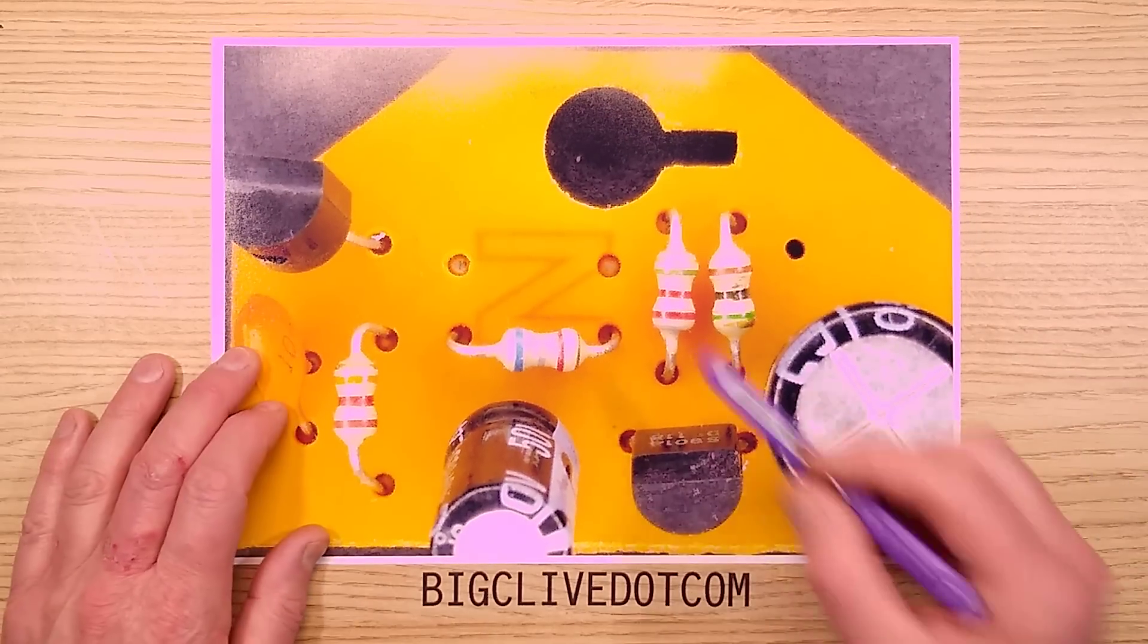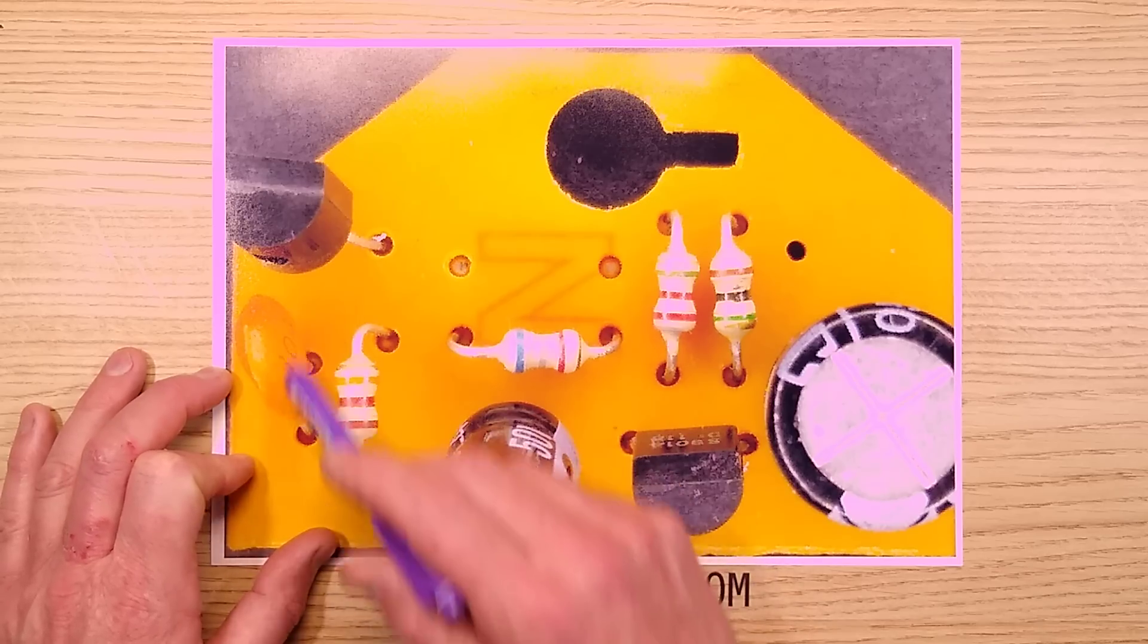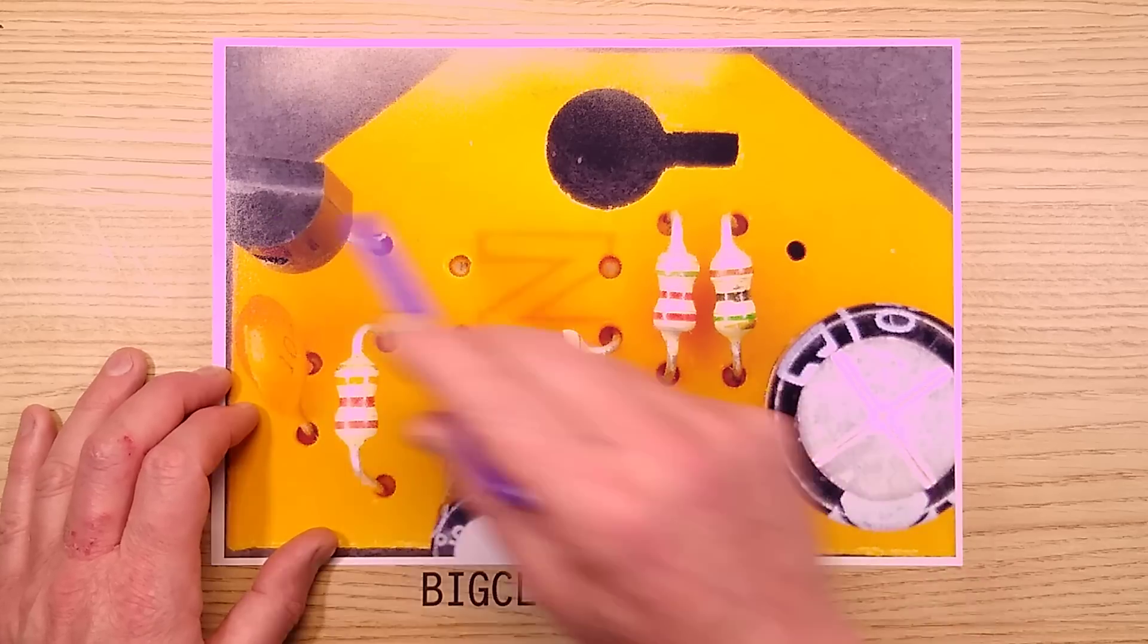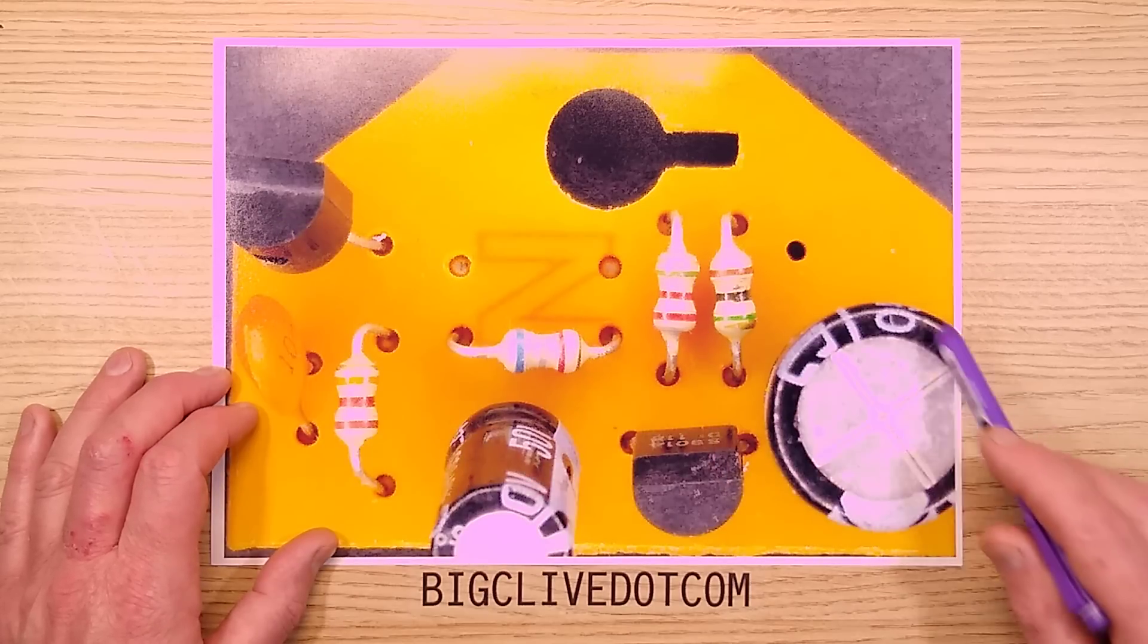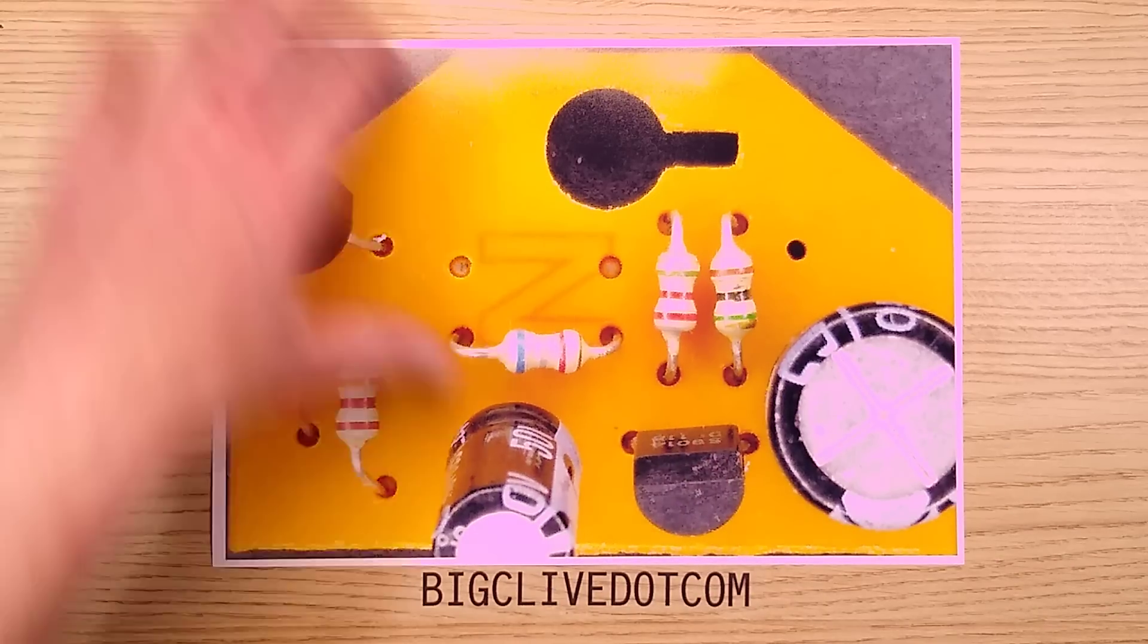The front of the circuit board is much more interesting. The coil is over here, there's a 100 nanofarad capacitor in parallel with the coil, there's a transistor to switch the coil, there's a transistor to switch that transistor, there's the main reservoir capacitor and then there's a feedback capacitor, a couple of bias resistors. Let me show you the schematic.